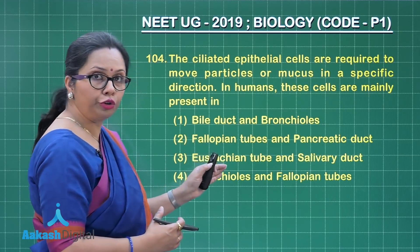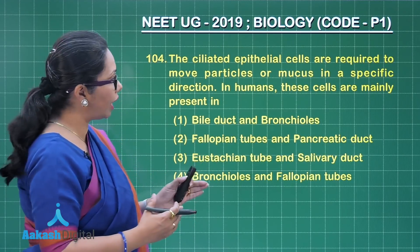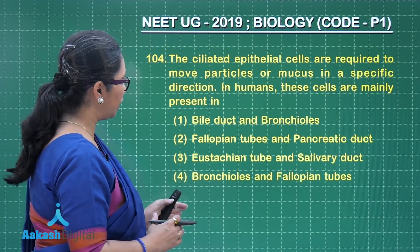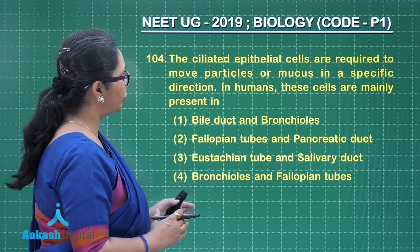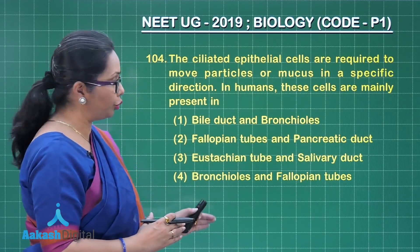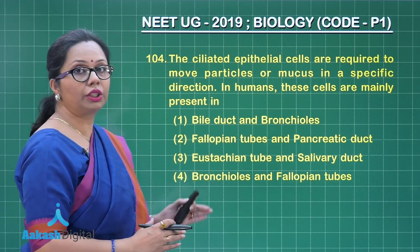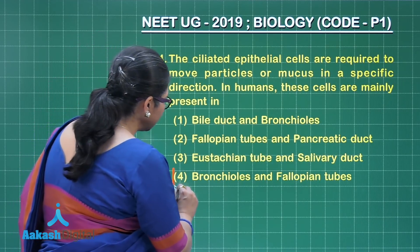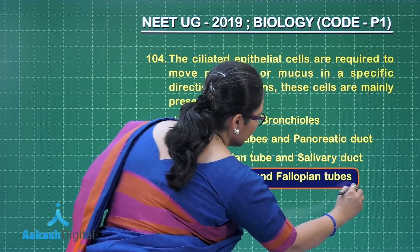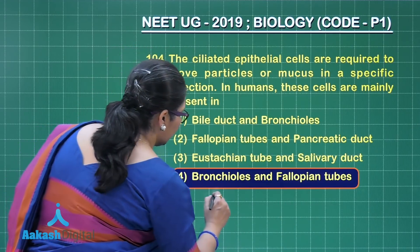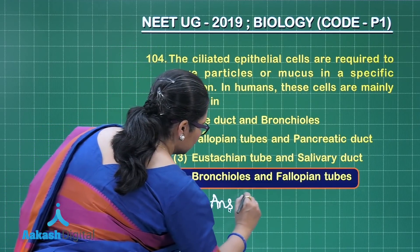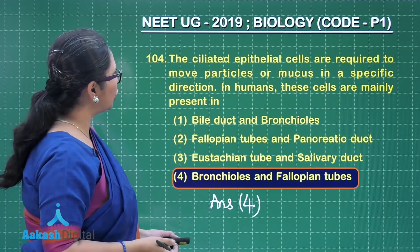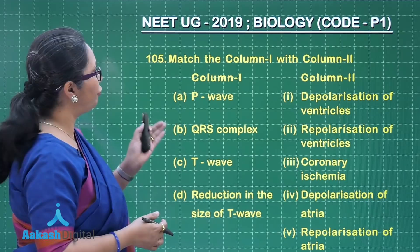The Eustachian tube is made up of elastic cartilage, and the salivary duct has non-ciliated epithelium. In the fourth option, bronchioles and fallopian tubes — both of these structures are lined by ciliated epithelium, making Option 4 the correct answer.